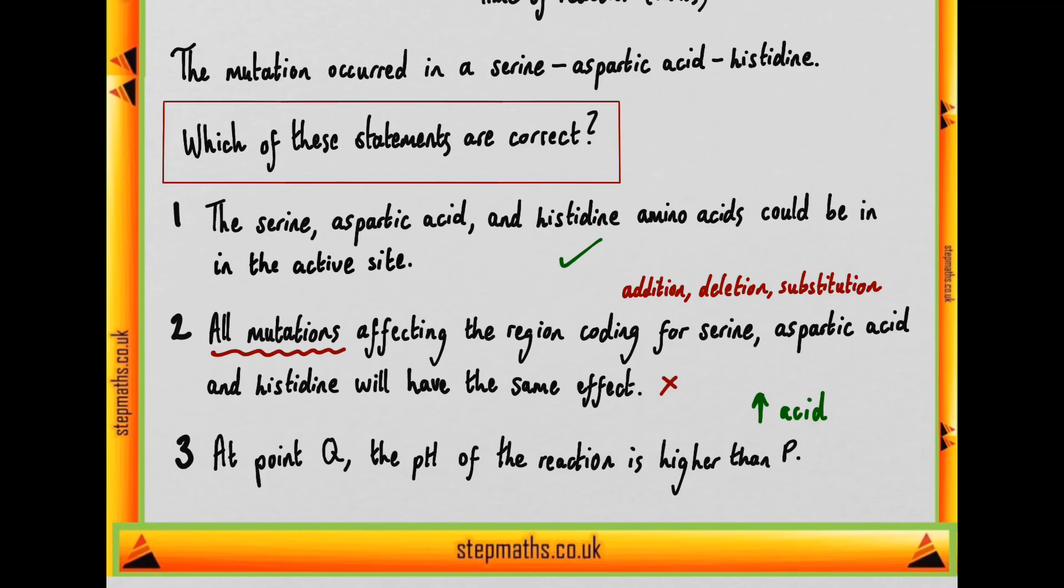So since there's an increase in acid levels, the pH at Q should be lower than it is at P, not higher. So we can say that based on what we've said, only statement one is correct, and therefore our answer to the question is going to be option B.